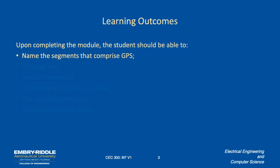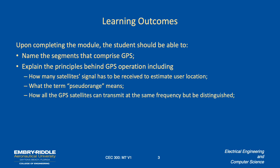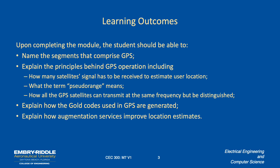The learning outcomes for this module are: you should be able to name the segments that comprise the GPS global positioning system, explain the principles behind GPS operation including how many satellite signals you have to receive to figure out where you are, understand what the term pseudo-range means and how it's distinguished from the actual range to the satellite, and understand how GPS satellites work on the same frequency but can be distinguished using gold codes. We'll also talk about augmentation services like the Wide Area Augmentation Service and Local Area Augmentation Service.